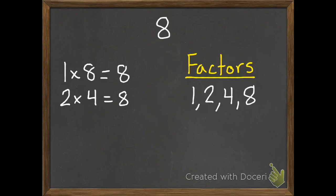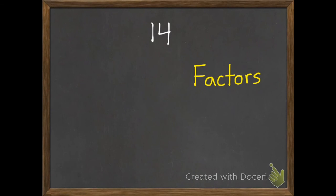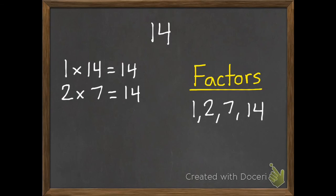One more practice problem for you. Find all of the factors of 14. Go ahead and pause. Start with 1. 1 times 14 equals 14. Try 2. It works. 2 times 7 equals 14. 3 does not work. 4 does not work. 5 does not work. 6 does not work. And 7 works. 7 times 2 equals 14. But we already have 7 and 2. So that means we're done. So our factors are 1, 2, 7, and 14.